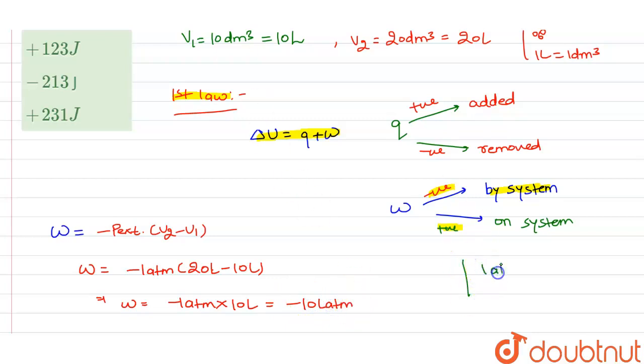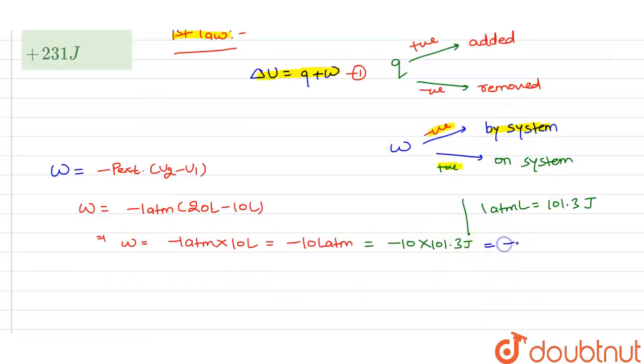1 atm liter is approximately 101.3 joule, so we can convert it into joule. So it will be 10 multiply 101.3 joule which will approximately come minus 1013 joule. Here negative sign indicates that the work is done by the system.